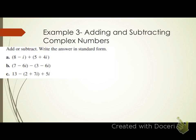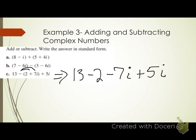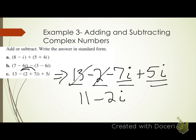For letter c, we again have a negative outside parentheses, so we distribute to get 13 minus 2 minus 7i plus 5i. Taking the real parts, 13 minus 2 gives 11. Taking the imaginary parts, negative 7i plus 5i gives negative 2i. The answer is 11 minus 2i, which is in standard form with the real part first and imaginary part second.